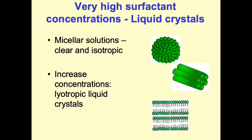If you increase the concentrations of surfactants, you can get liquid crystal style structures: long rods where the hydrophobic chains are internal and the hydrophilic head groups face outwards in a cylindrical arrangement, or lamellar structures where molecules pack with head groups and tails all lined up, as seen in the bottom picture here. These are lyotropic liquid crystals — they are anisotropic, meaning what they look like depends on the angle. Looking at rods from the end, they appear spherical; from the side, they appear long and thin.